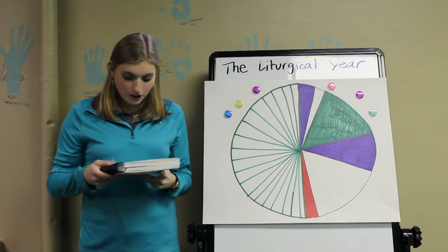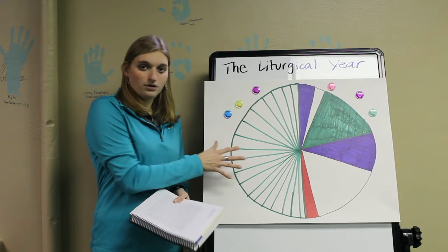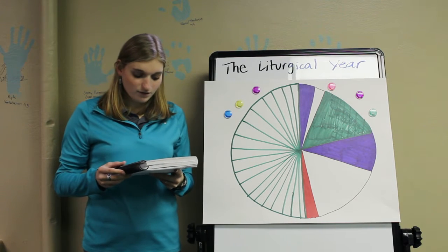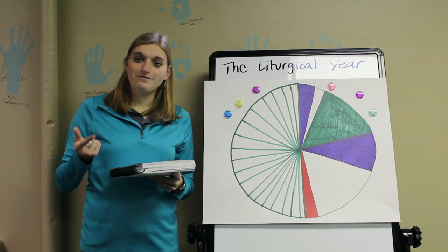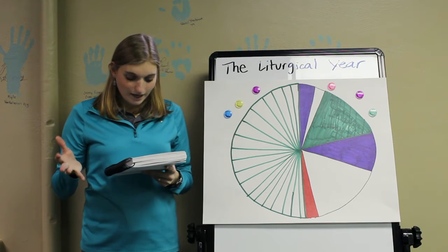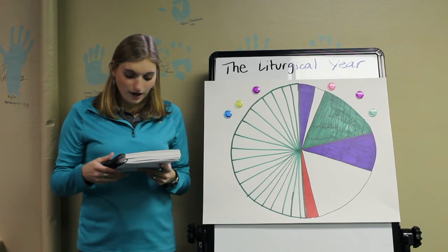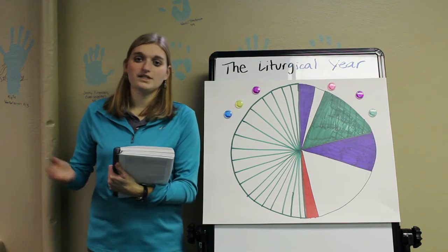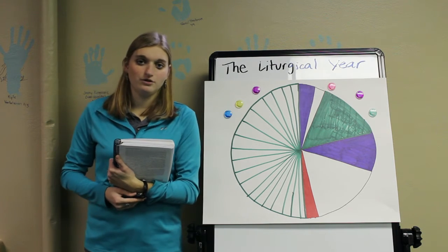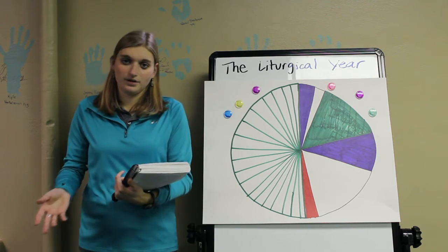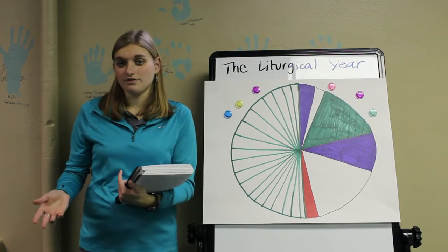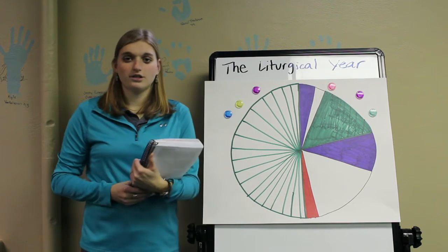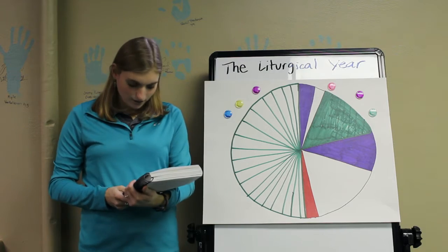The church's year is Christological, which means it tells the time by celebrating the events of Jesus' birth, life, death, resurrection, and ascension, as well as the gift of the Holy Spirit. So while some of us tell time using days, hours, seconds, even months, the church uses parts of Jesus' life to tell time.